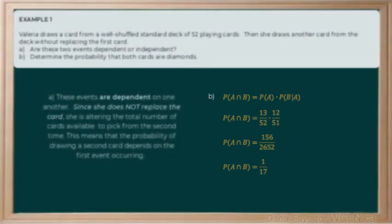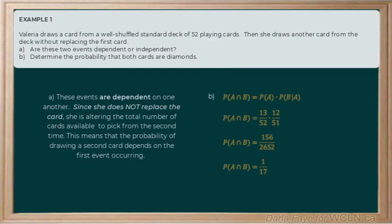We want to know the probability of event A and event B occurring. We're going to multiply these two values together. When we do that and then simplify, we end up with 1 over 17. So there's a 1 in 17 chance that both cards that are selected are diamonds.